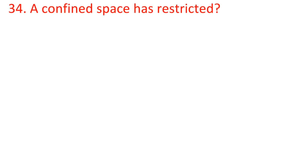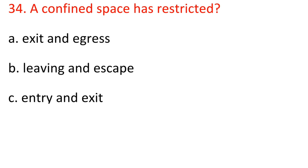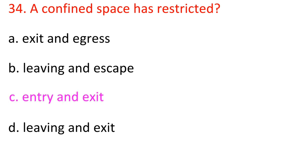Question 34: A confined space has restricted — A) Exit and egress, B) Leaving and escape, C) Entry and exit, D) Leaving and exit. Answer: C) Entry and exit.